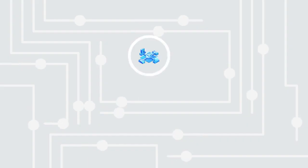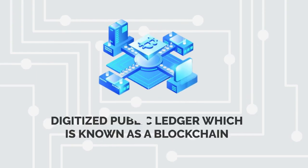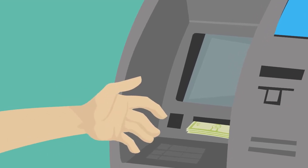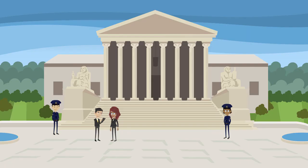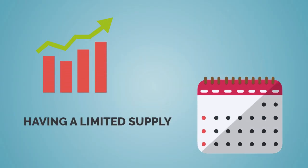Every Bitcoin transaction made exists on a digitized public ledger, which is known as a blockchain. This makes transactions hard to reverse and difficult to fake. The best thing about Bitcoin is that it is not regulated by any centralized institution such as banks or even the government. Having a limited supply, Bitcoin is only going to increase in price as the years roll by.